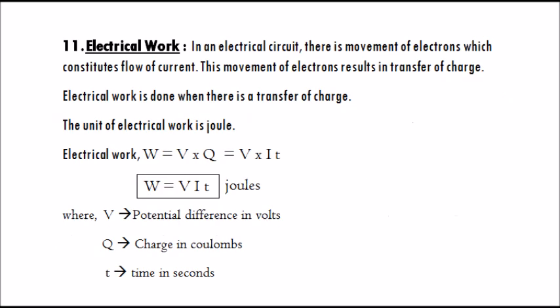Electrical work: in an electrical circuit, there is movement of electrons which constitutes flow of current. This movement results in transfer of charge, and electrical work is done when there is a transfer of charge. The unit of electrical work is joule. Electrical work is W equals V into Q, which equals V·I·T joules, where V is the potential difference in volts, Q is the charge in coulombs, and T is the time in seconds.